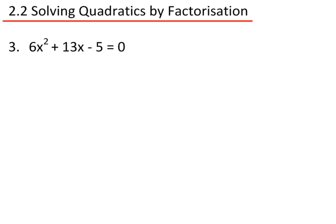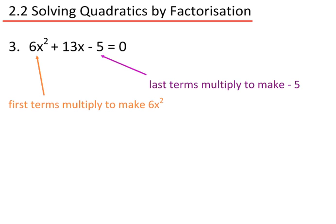Question 3: 6x squared plus 13x minus 5 equals 0. I need to factorize this. Because of the 6x squared, this is more complicated than the last example. The first terms multiply to make 6x squared. I'd need a 1 and a 6, or a 2 and a 3.